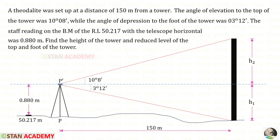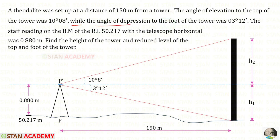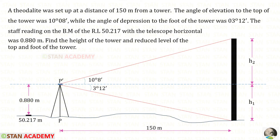Now let us see a problem. A theodolite was set up at a distance of 150 meters from a tower. The angle of elevation to the top of the tower was 10 degrees 8 minutes, while the angle of depression to the foot of the tower was 3 degrees 12 minutes. The staff reading on a benchmark of reduced level 50.217 with the telescope horizontal was 0.88 meter. Find the height of the tower and the reduced level of the top and foot of the tower.